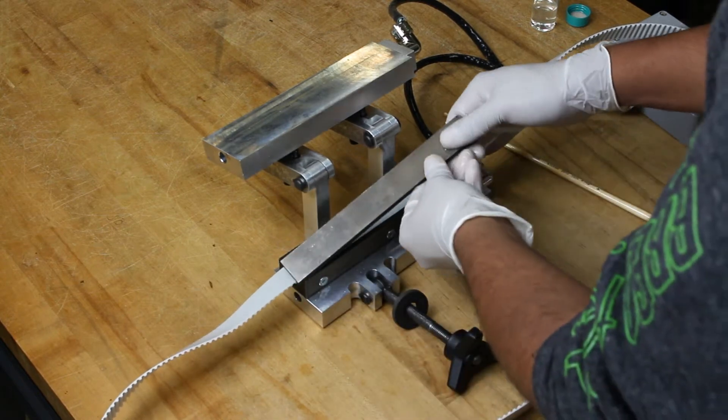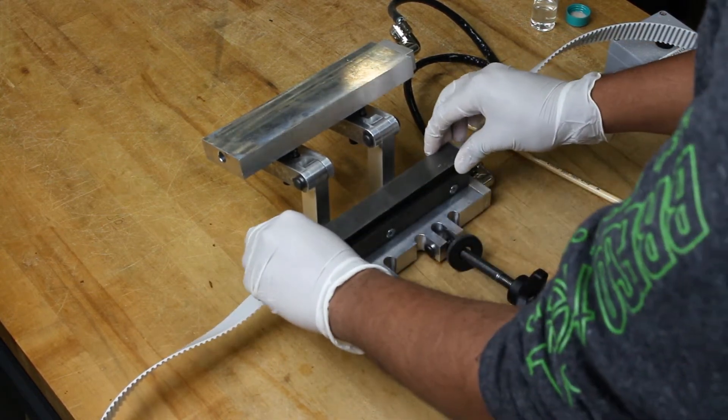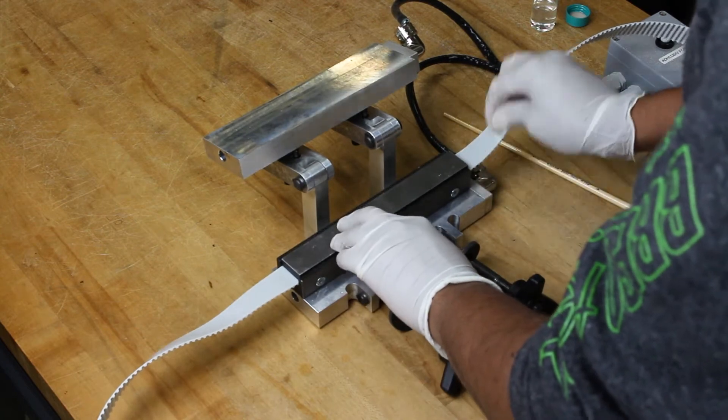Once you have gotten the belt seated in the toothed plate, cover the belt with the top plate with the black coated surface facing down and close the welder as shown here.